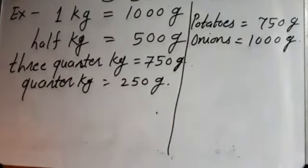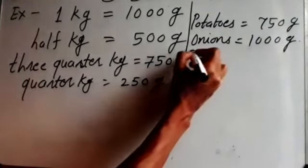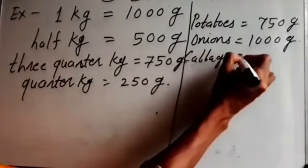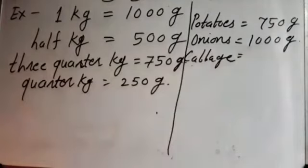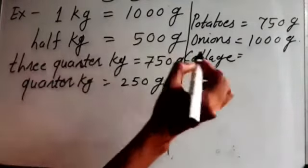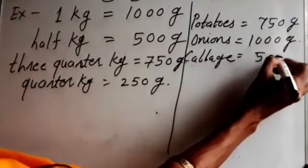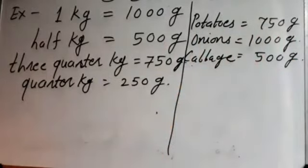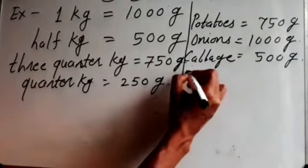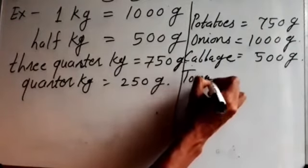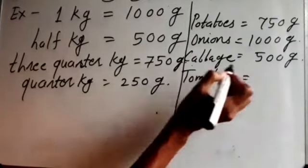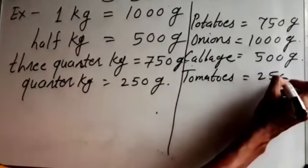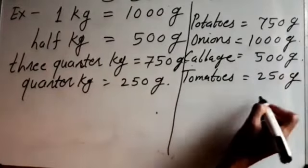Half a kilo cabbage — half a kilogram means 500 gram. And a quarter kilo tomatoes — quarter kilogram means 250 gram.